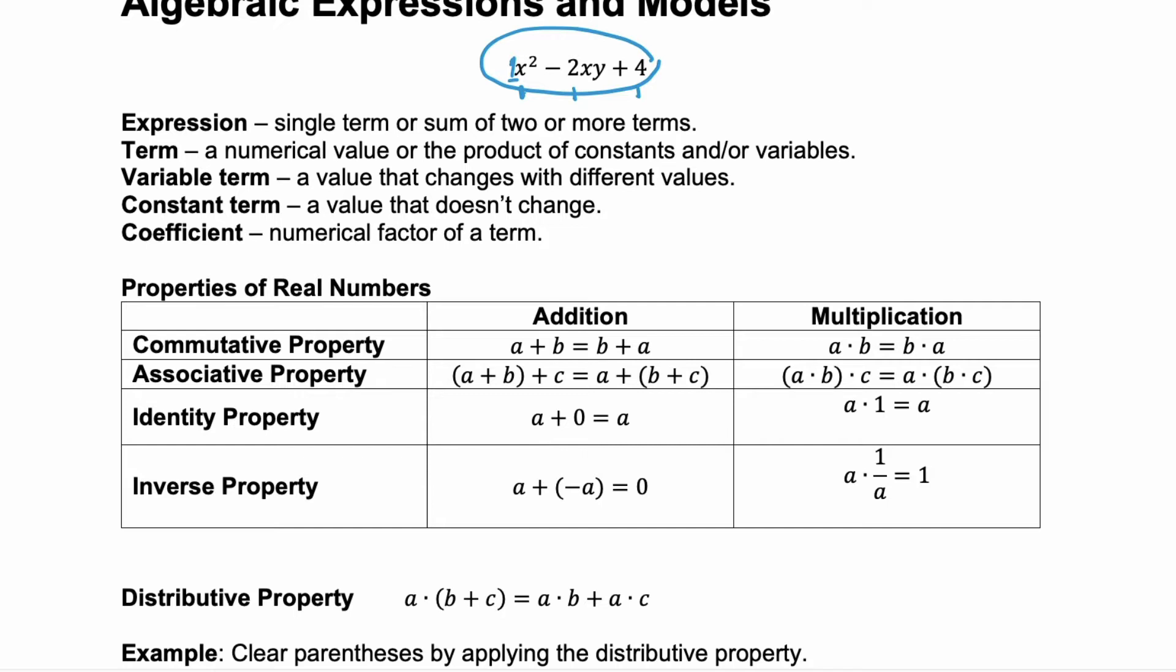We have the associative property so it doesn't matter how you group those things when you're adding or multiplying. You have the identity property of addition which is with the number 0. So any number plus 0 is itself and with multiplication that's the number 1. So anything times 1 or multiplied by 1 is itself.